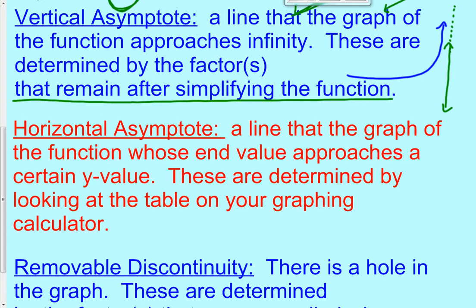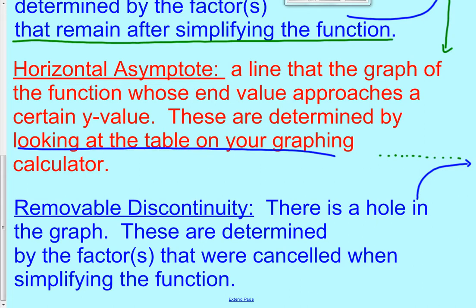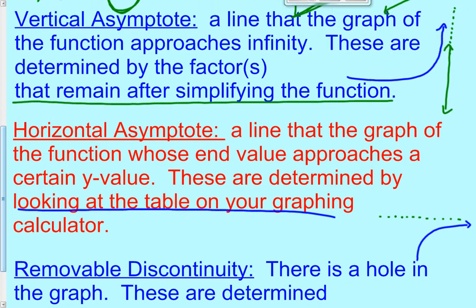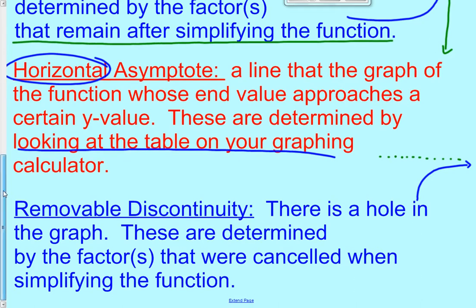A horizontal asymptote is very similar, except now it's a horizontal line that your graph approaches. It gets closer and closer to the asymptote but never ever touches it — it just approaches it. Horizontal asymptotes can only be determined by looking at the table on your graphing calculator, whereas vertical asymptotes are found by simplifying the function.